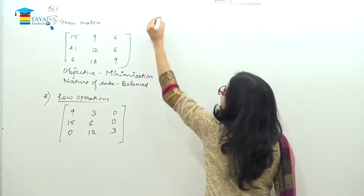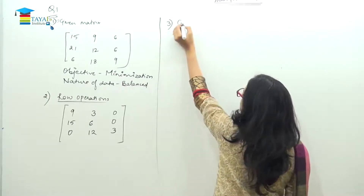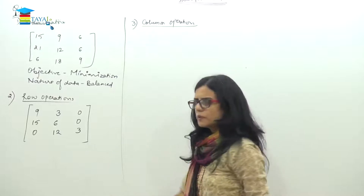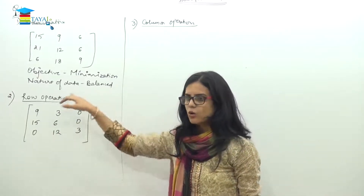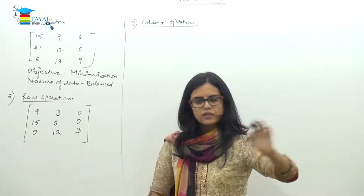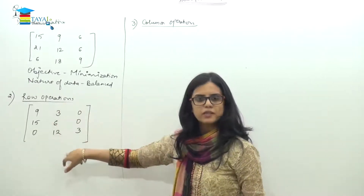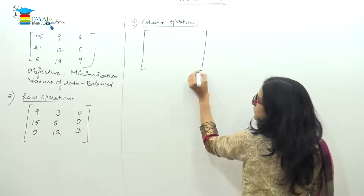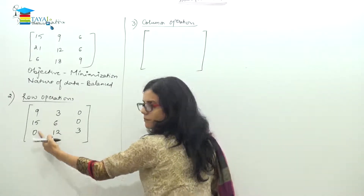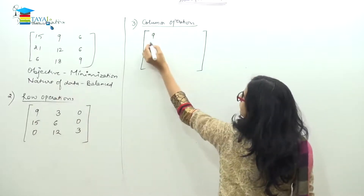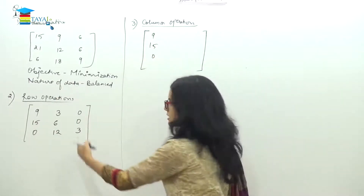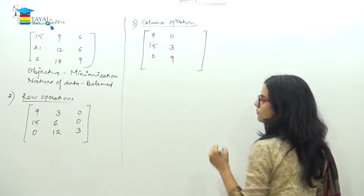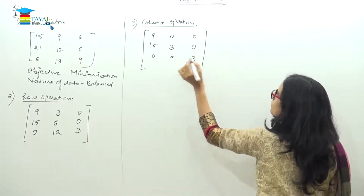Column operation: column-wise, find the minimum and subtract. First column minimum is 0 — subtract 0, giving 9, 15, and 0. Second column minimum is 3 — we get 0, 3, and 9. Third column minimum is 0 — giving 0, 0, and 3.